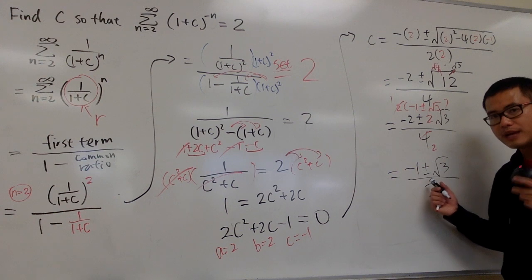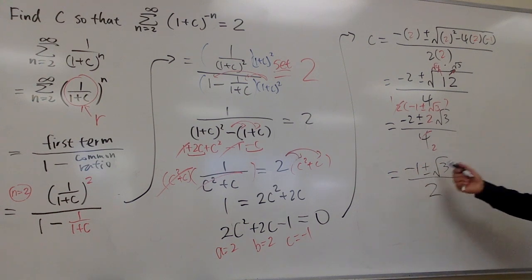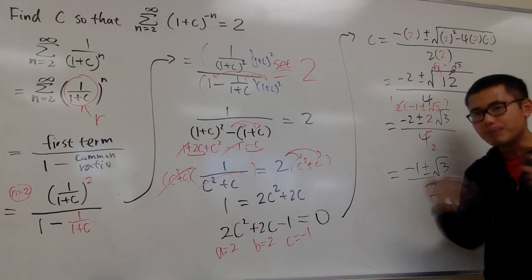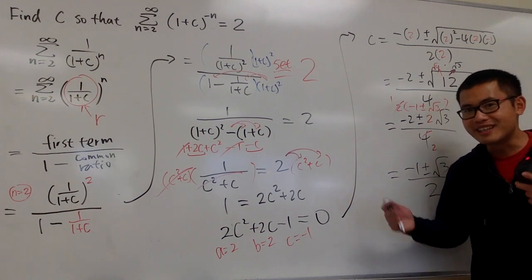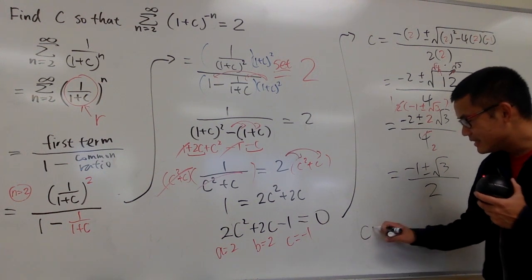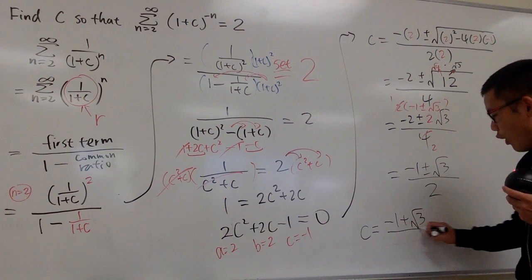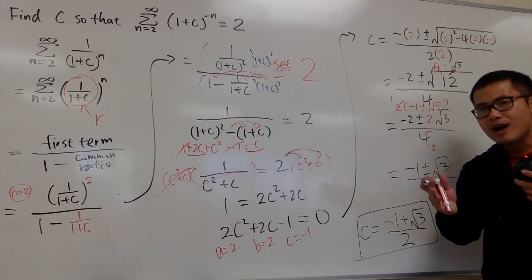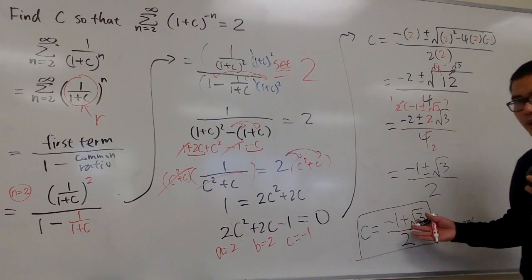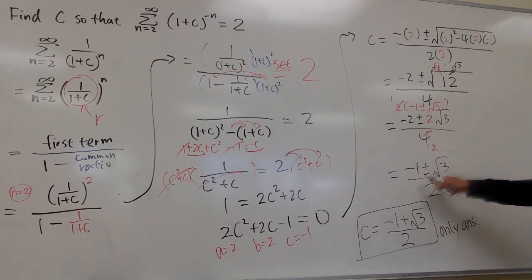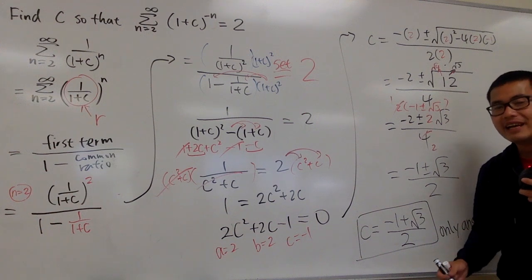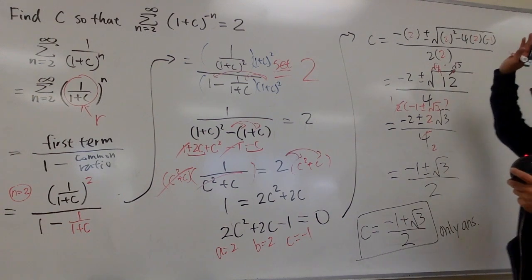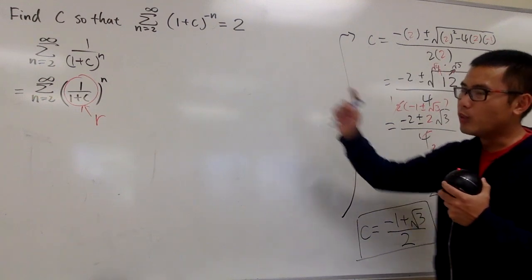We notice that we have two possibilities for c. The first one is (negative 1 plus square root of 3) over 2, and the other one is (negative 1 minus square root of 3) over 2. Should we take both, or maybe only one? Let me tell you: c equals (negative 1 plus square root of 3) over 2 is the only answer. Please pause the video and think about why the second value doesn't work for the original series — and it's not just because of the minus sign.